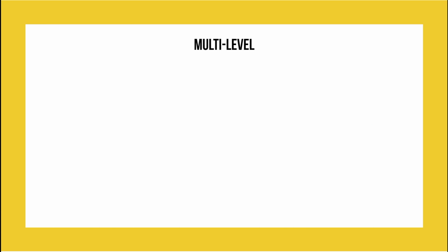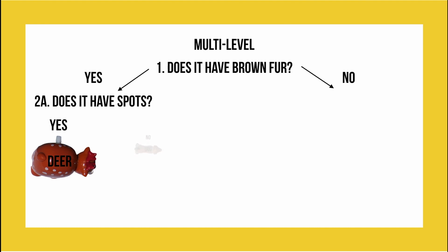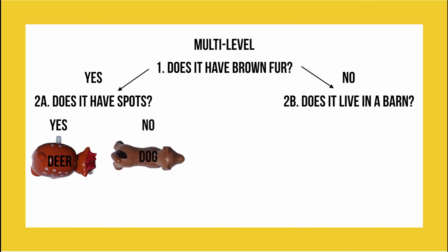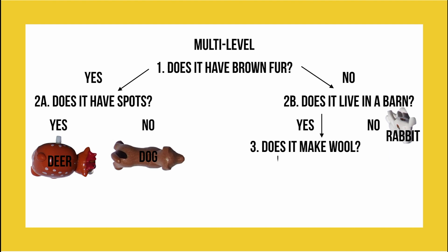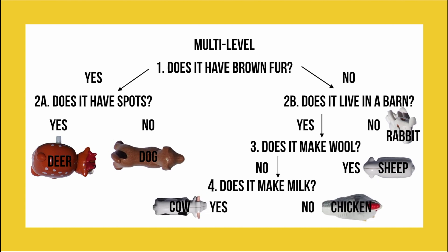Let's see how this works with our animals. We start by asking: does it have brown fur? Now we have two different categories — yes and no. On the yes side we then ask: does it have spots? If yes then it's a deer, and if no it's a dog. On the other side we ask: does it live in a barn? We then split it again with yes leading to another question and no leading to the rabbit. Our third question is: does it make wool? No splits it further while yes means that it's a sheep. Our final question asks: does it make milk? If you pick yes, you reach the cow, and if you pick no you reach the chicken.